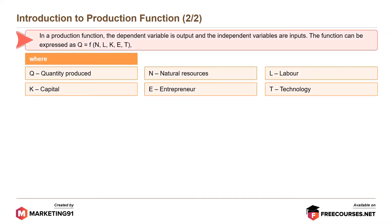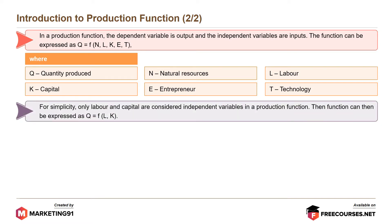In a production function, the dependent variable is output and the independent variables are inputs. The function can be expressed as quantity produced equal to function of natural resources, labor, capital, entrepreneur and technology. For simplicity, only labor and capital are considered independent variables, and the function can then be expressed as Q equal to function of labor and capital.